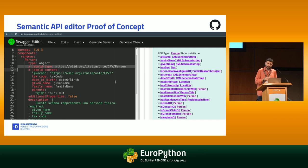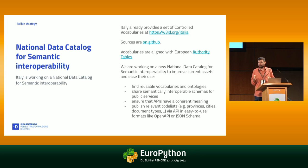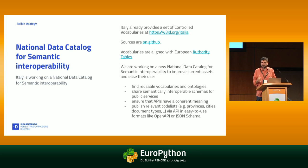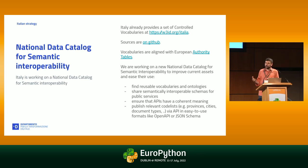Catalogs ensure that API design is consistent within a given ecosystem. In Italy we are building a national data catalog for semantic interoperability. We already have a set of controlled vocabularies available from a URI, sources are on GitHub, and those vocabularies are aligned with European authority tables. The national data catalog will allow finding reusable vocabularies and ontologies, sharing semantically interoperable schemas and public services, and ensuring that APIs have correct meaning and can be mashed up together.